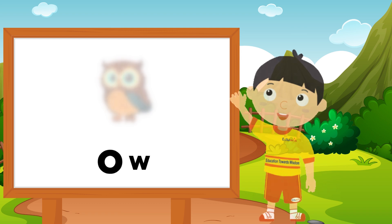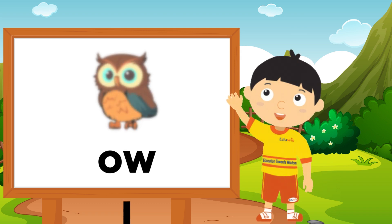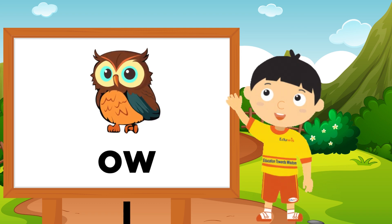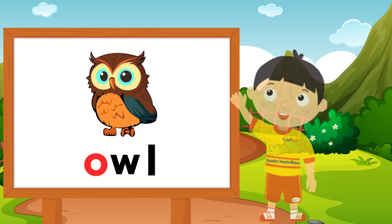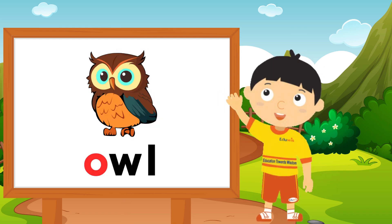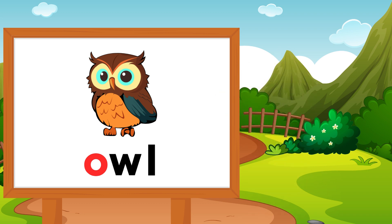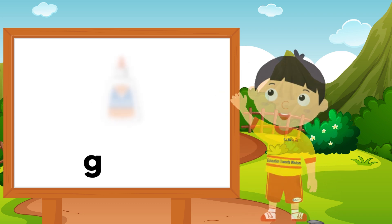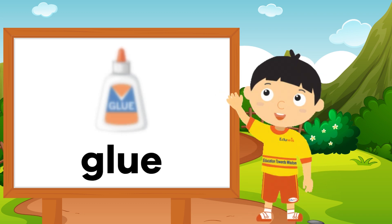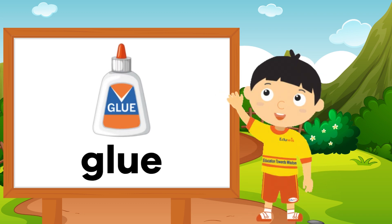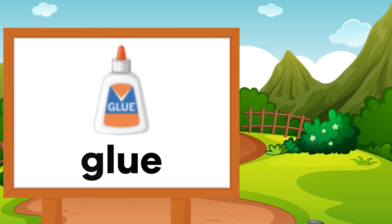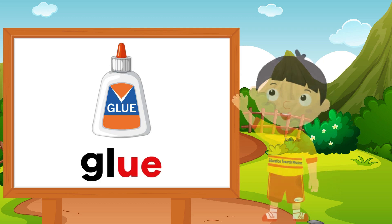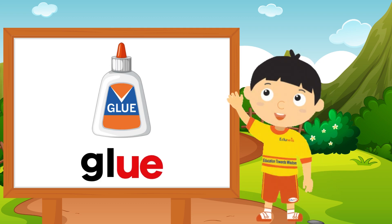O, W, L, L, O — owl. Here, O is a vowel. G, L, U, E — glue. Here, U is a vowel. And the other letters are consonants.